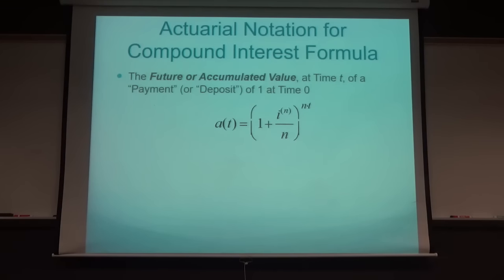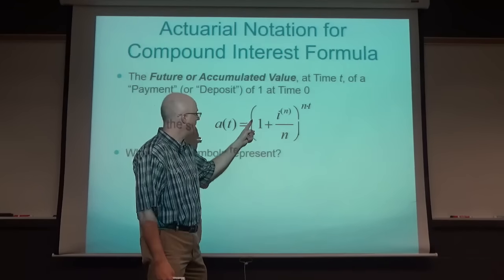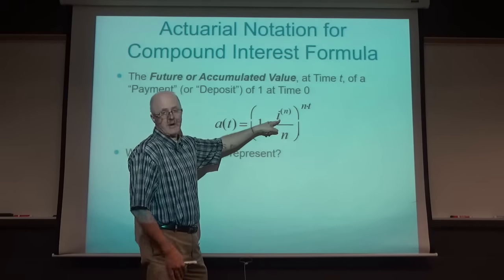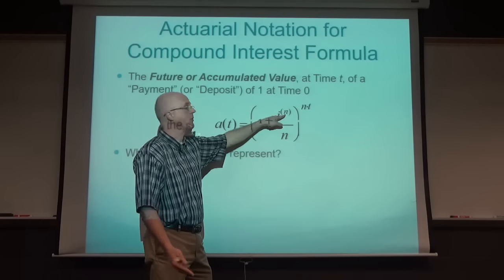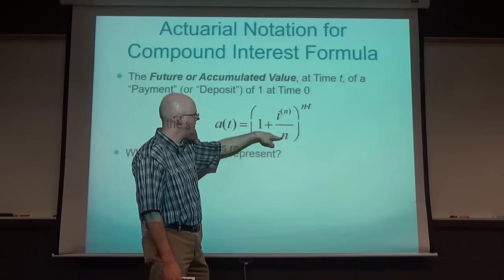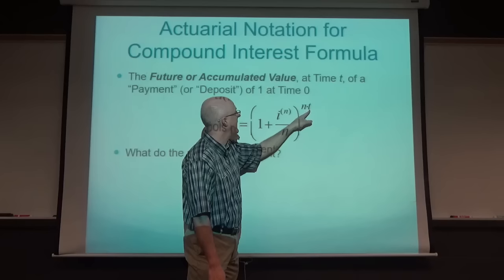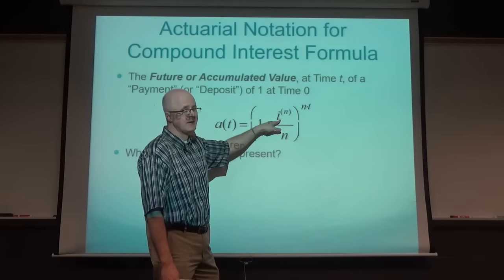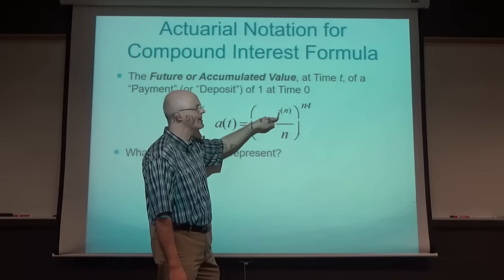There is a deposit of one in front that we don't bother writing since multiplying by one doesn't change it. I_N is the interest rate compounded N times per year - N might be 4 for quarterly or 12 for monthly compounding. T is time in years. Don't get confused: I here is not the imaginary unit, not the square root of negative one. I stands for the interest rate, often called a nominal rate.